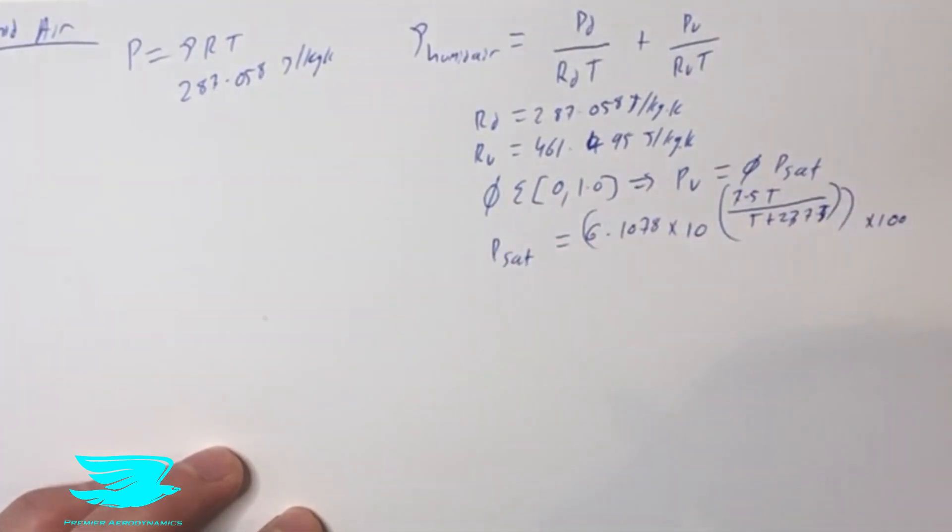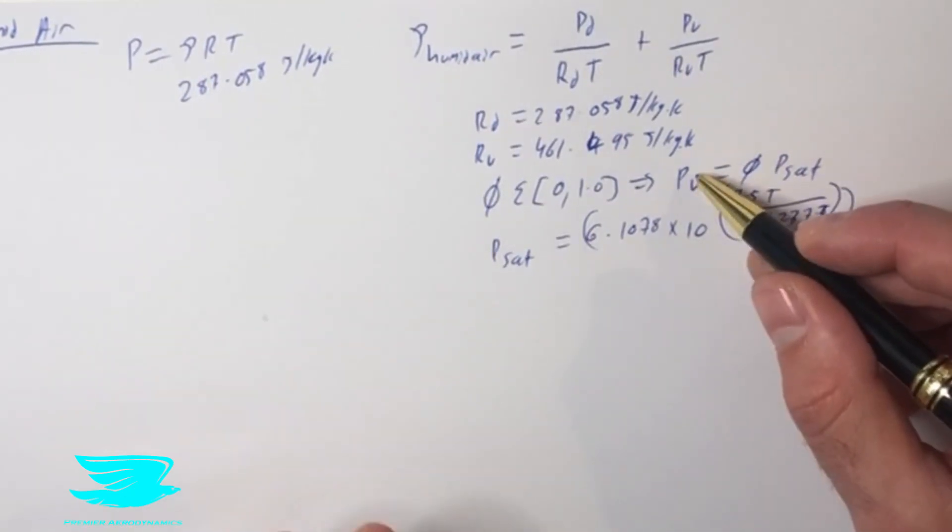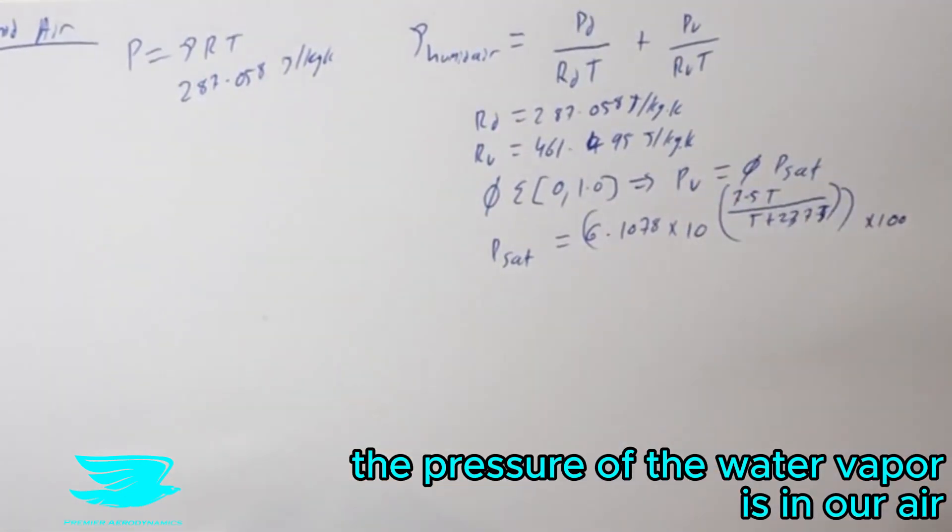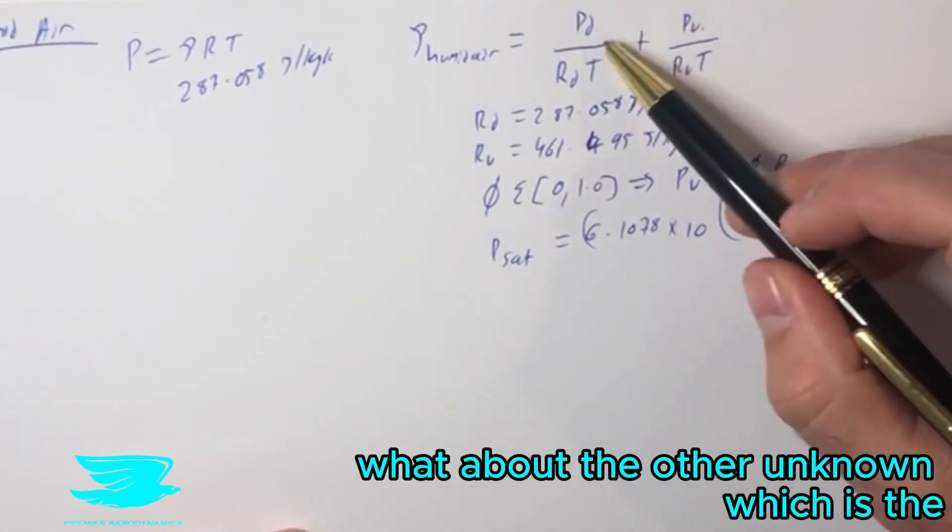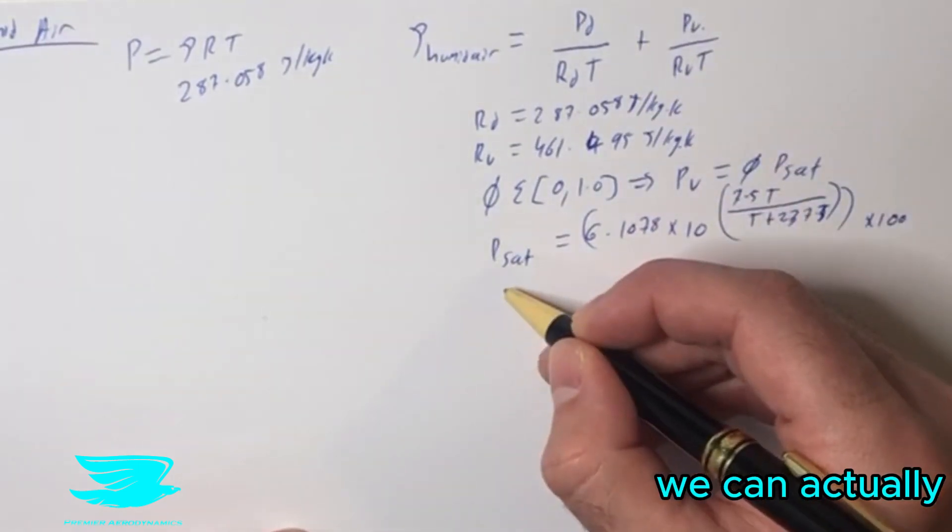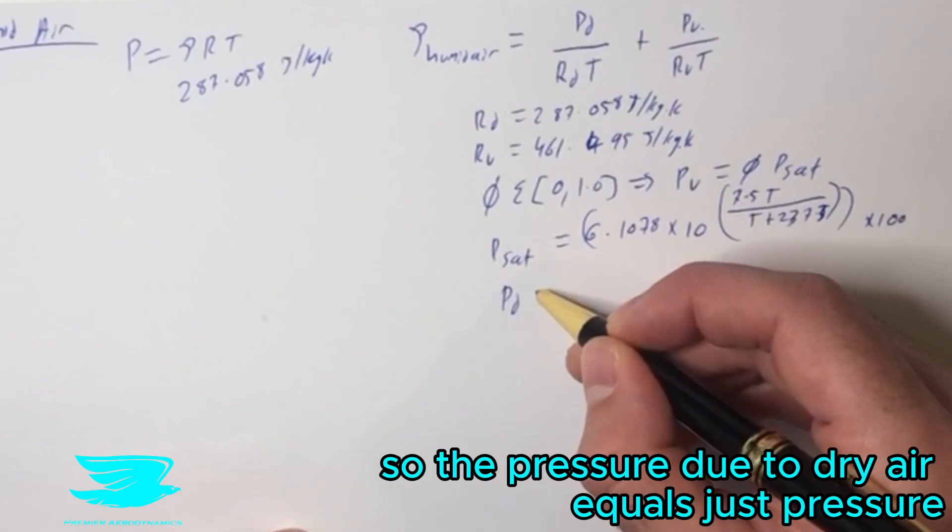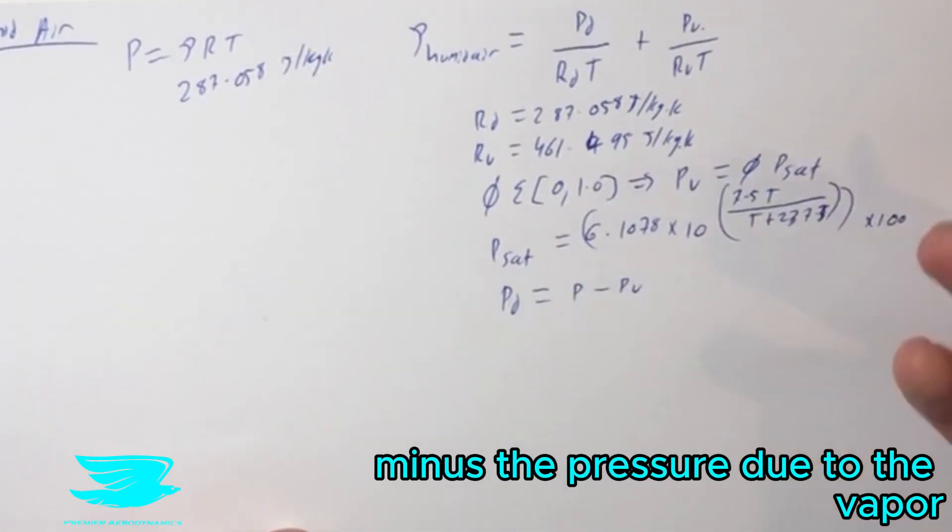Once we know what the saturation pressure is, we can then figure out what the pressure of the water vapor is in our air. Now how does this help us? We figured out one unknown. What about the other unknown, which is the pressure due to the dry air? We can actually calculate that quite easily. The pressure due to dry air equals the total pressure that we measure, minus the pressure due to the vapor.